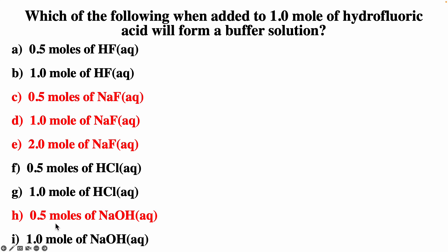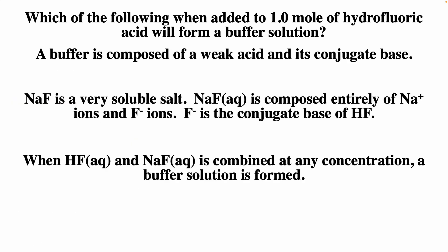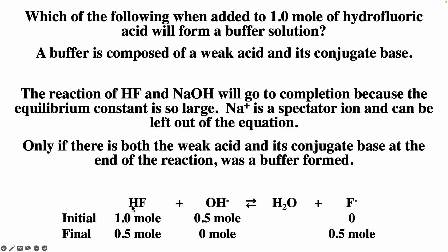A buffer just needs to be composed of a weak acid and its conjugate base. Sodium fluoride is very soluble, and F⁻ is the conjugate base of HF, so concentration doesn't matter — we'll end up with some HF and some F⁻. When reacting HF with hydroxide ion, we just need to ensure we don't consume all the HF. So as long as the initial hydroxide concentration is less than the initial concentration of HF, we should get a buffer solution.